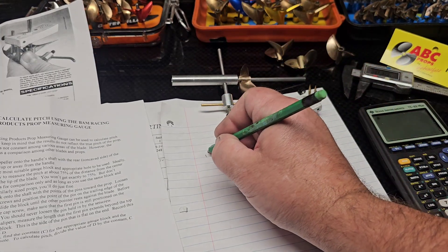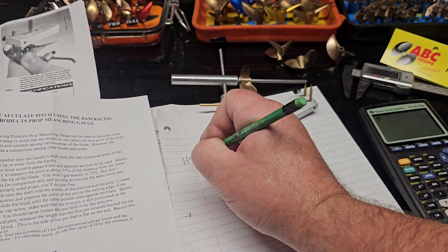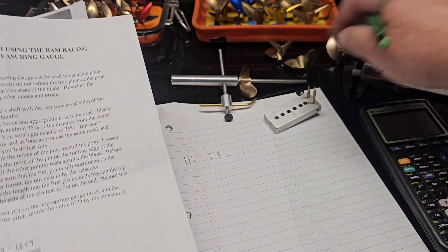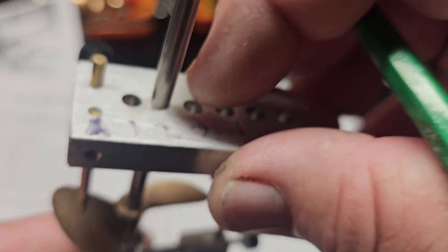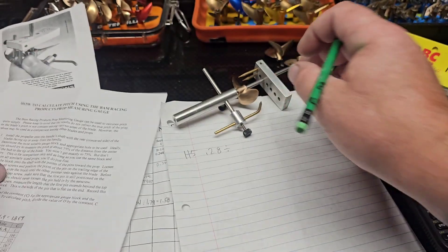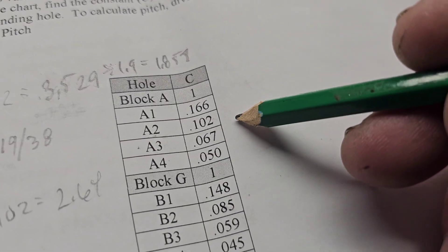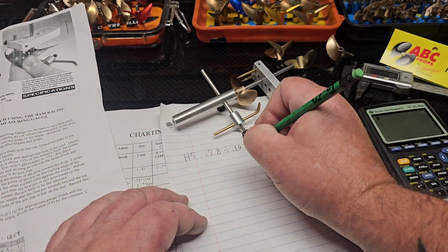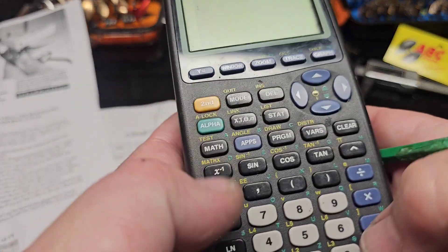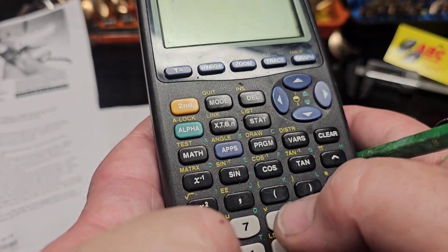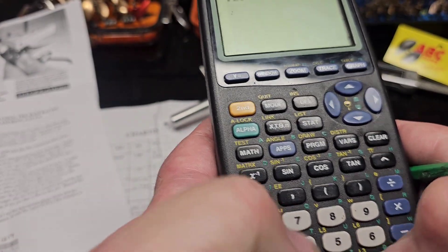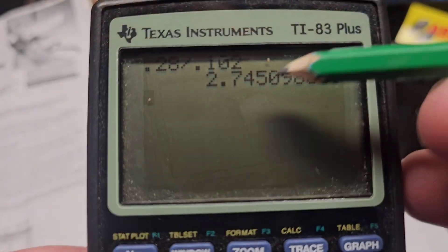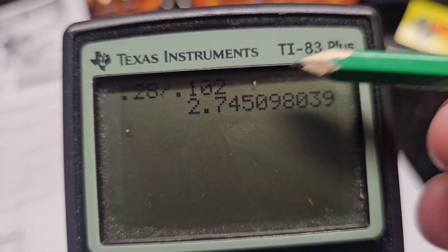So 0.28, this is an H5, 0.28 divided by the hole we used on the block, which we're using a block. We have two different blocks. A2, A2 is 0.102.